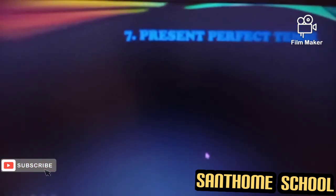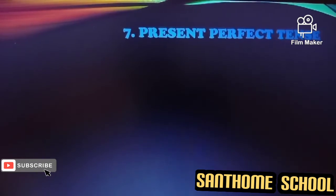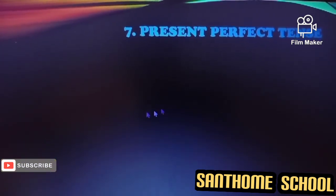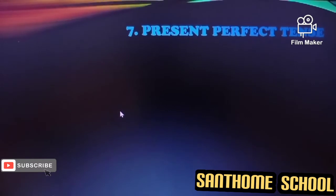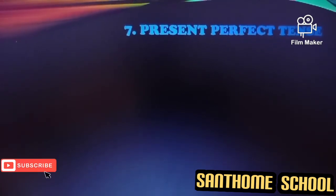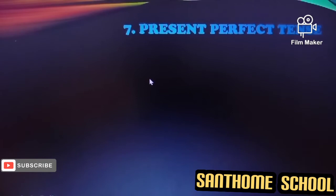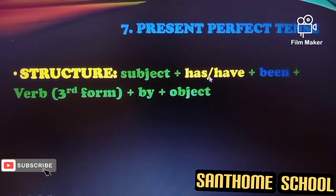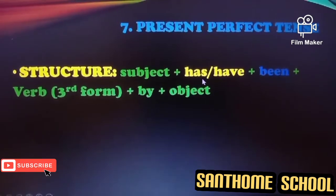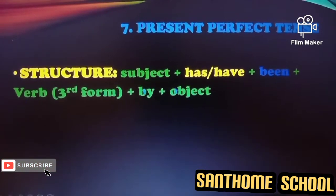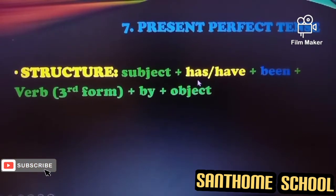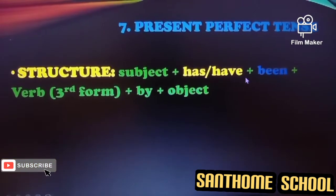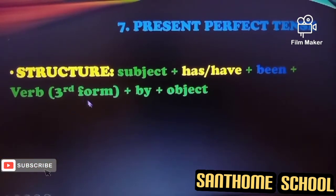After learning a few tenses, we shall begin with the present perfect tense. Let's look at how we can convert passive voices in present perfect tense. The structure requires slight changes in the to-be forms of the verbs, helping verbs, and auxiliaries. Here we are supposed to use 'has' or 'have' plus 'been' plus the third form of the verb.